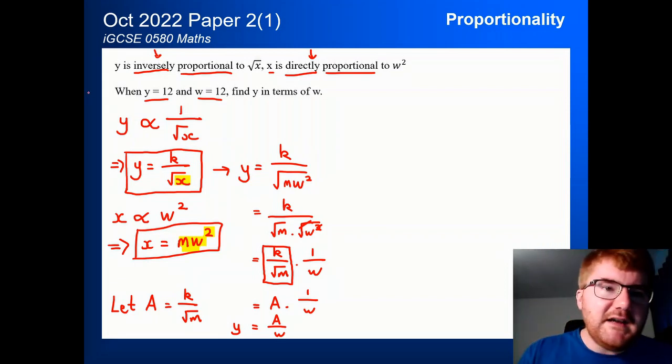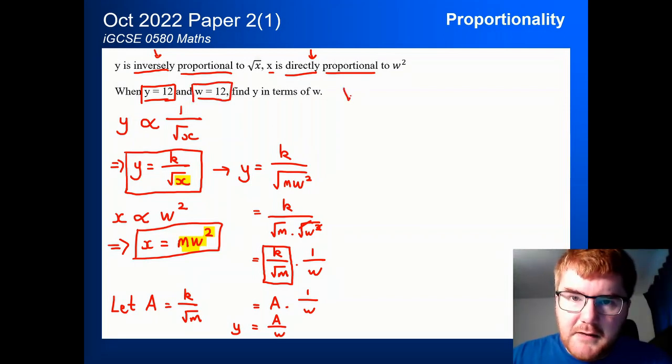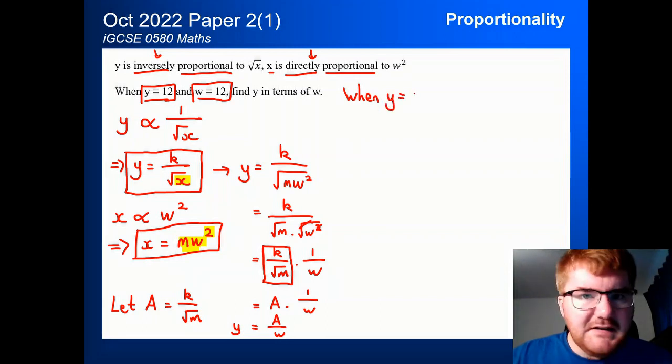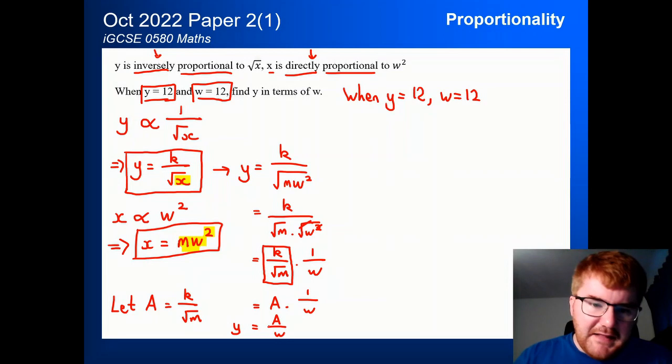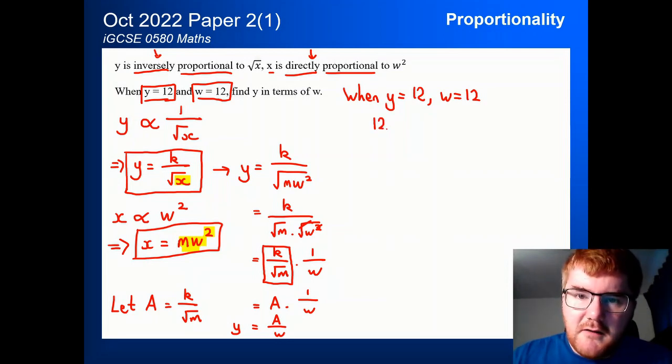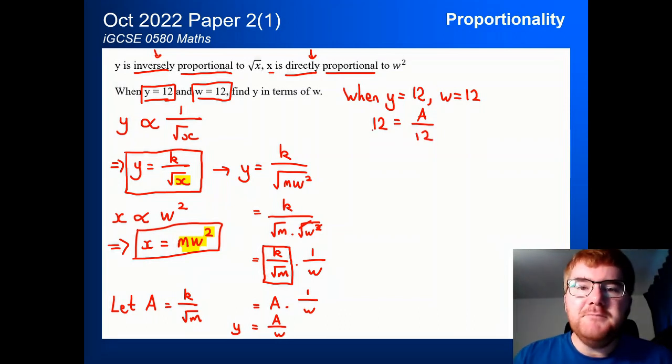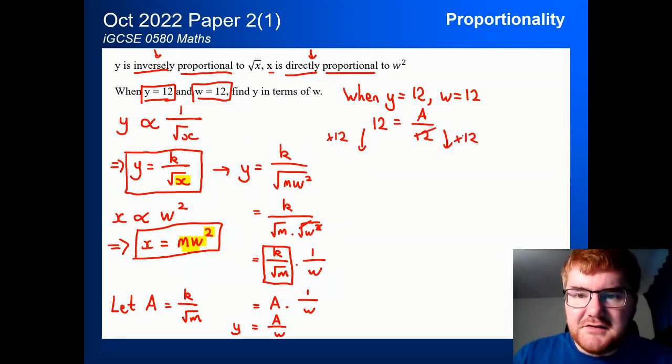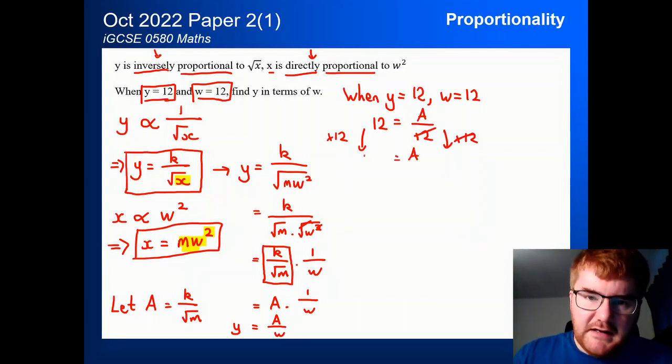Now, why is that helpful? Well, we can now use the initial conditions. So when y is 12 and w is 12. So let's write that up here. So when y is equal to 12, w is also equal to 12. And now we just substitute this in. So we get 12 equals A over 12. We're going to get the A on its own here. So what's the opposite of dividing by 12? Well, timesing by 12 on both sides. This cancels. We're left with just A, and then 12 times 12 is 144.